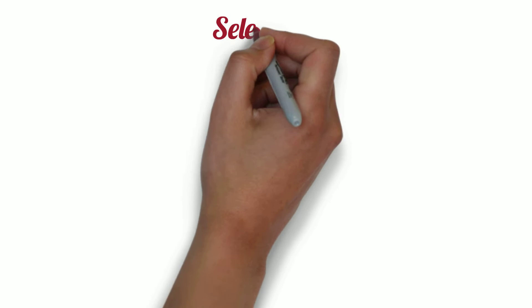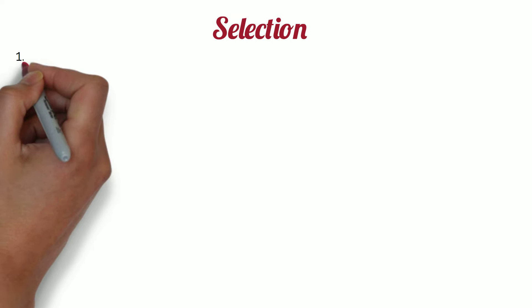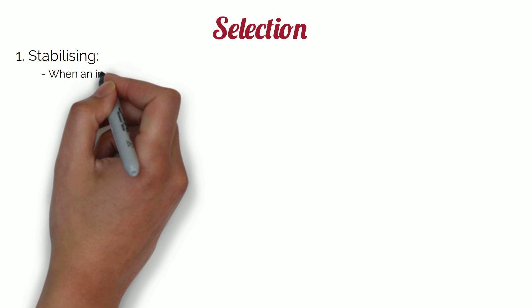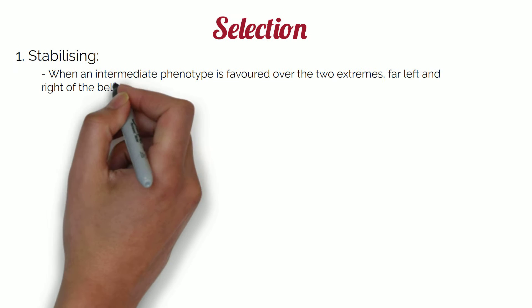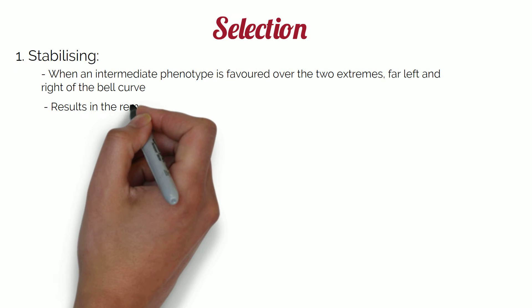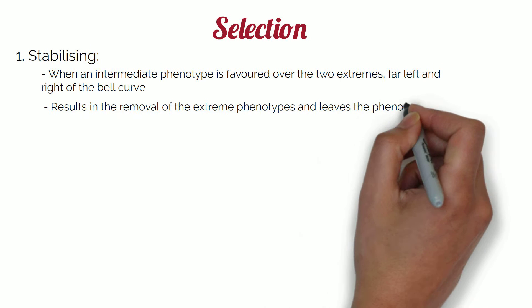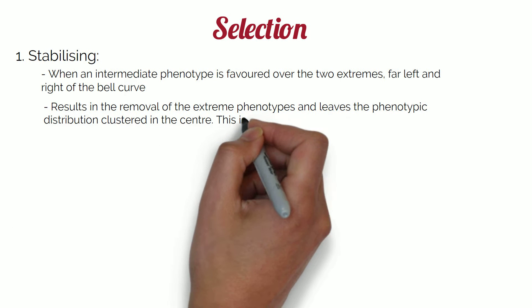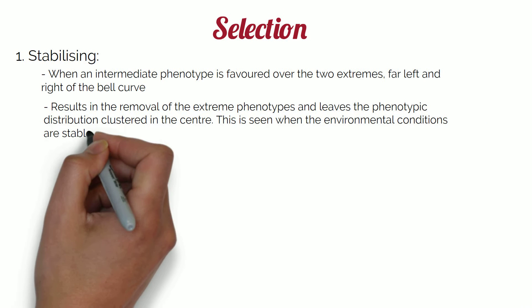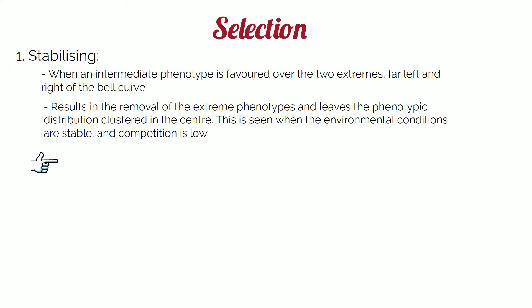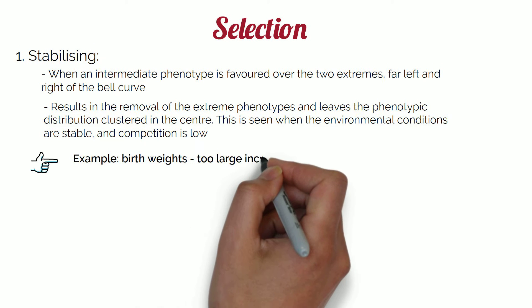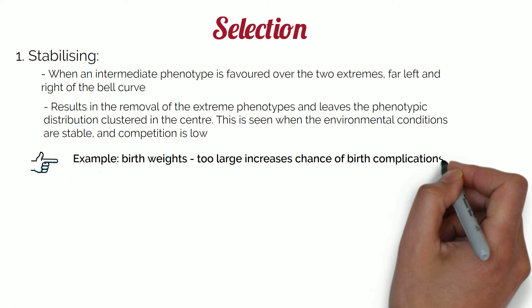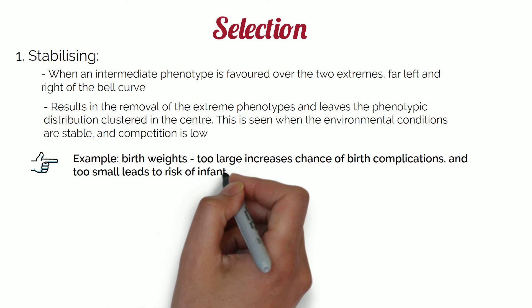There are three types of selection which occur in nature, shown in the phenotypic distribution curves. First is stabilising selection, where an intermediate phenotype is favoured over the two extremes at the far left and right of the bell curve. This results in the removal of extreme phenotypes, leaving the phenotypic distribution clustered in the centre. This is seen when environmental conditions are stable and competition is low. For example, in humans, stabilising selection acts on birth weight: too large increases the risk of birth complications, and too small increases the risk of infant mortality.